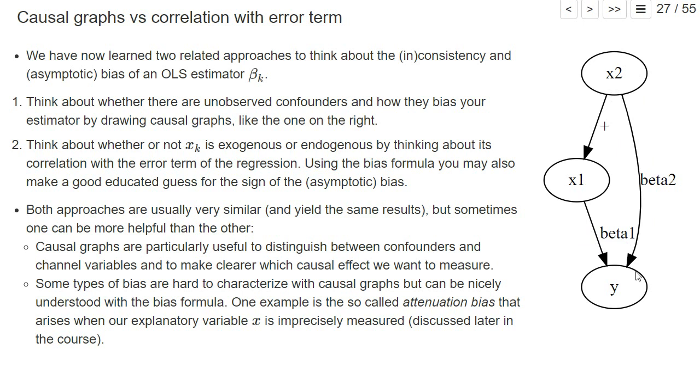If x2 influences both x1 and y positively, then we will have a positive bias because we have this positive indirect relationship. So that's one way to think about why an OLS estimator can be biased—thinking of confounders and drawing these graphs.